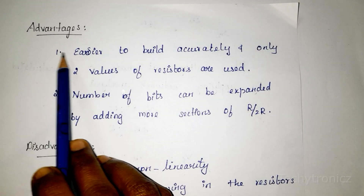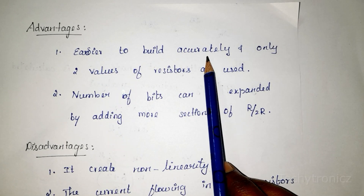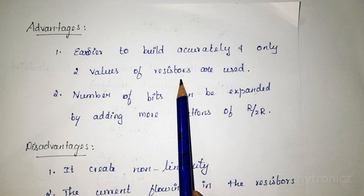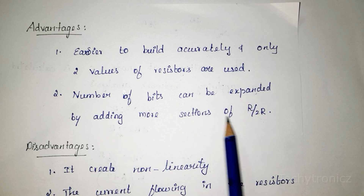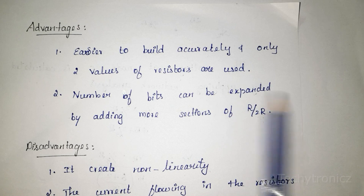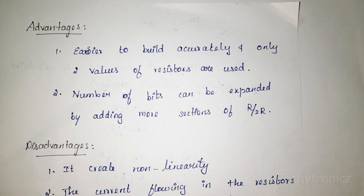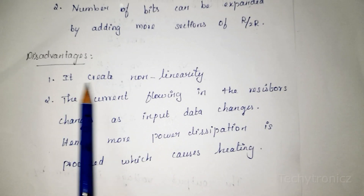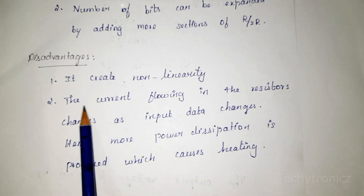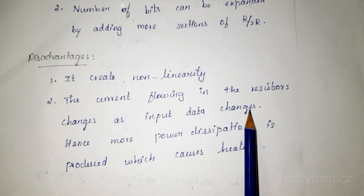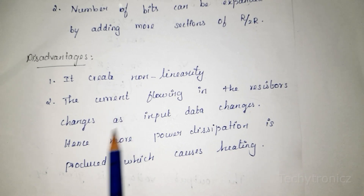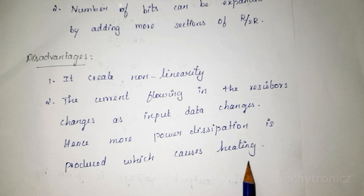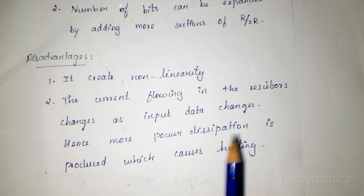The advantages of R2R Ladder DAC are that it is easier to build accurately because we are using only two values of resistor, and the number of bits can be expanded by adding more sections of R2R resistors. The disadvantages are that it creates non-linearity, the current flowing in the resistors changes as input data changes, and this means there is more power dissipation due to heating. So power dissipation is very high in this R2R Ladder type.